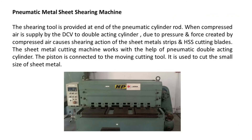Pneumatic metal sheet shearing machine. The shearing tool is provided at the end of the pneumatic cylinder rod. When compressed air is supplied by the DCV to the double acting cylinder, the pressure and force created by the compressed air causes shearing action of the sheet metal strips and HSS cutting blades. The sheet metal cutting machine works with the help of a pneumatic double acting cylinder. The piston is connected to the moving cutting tool. It is used to cut small size sheet metal.